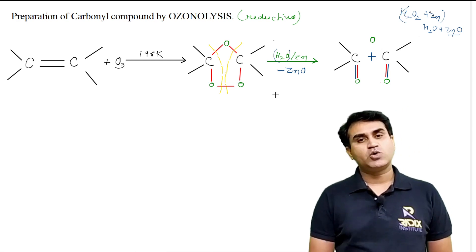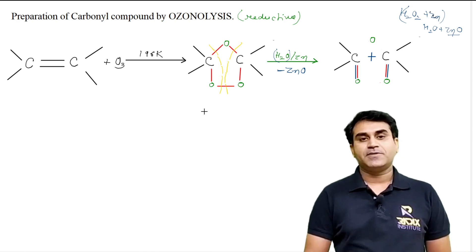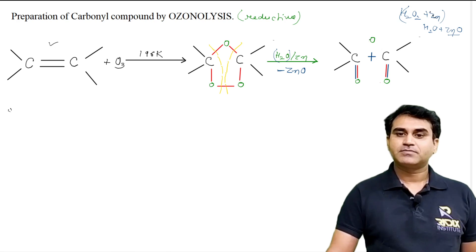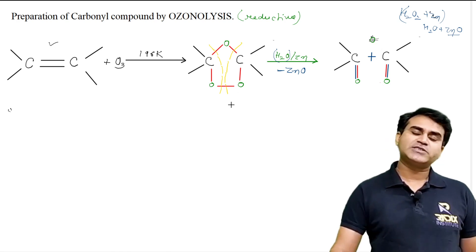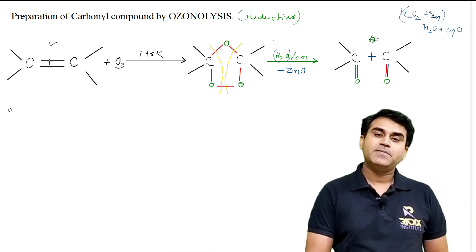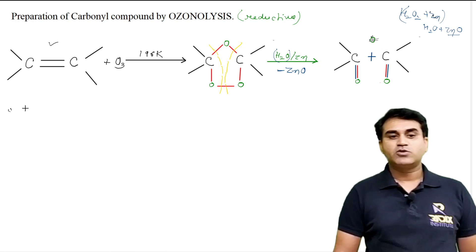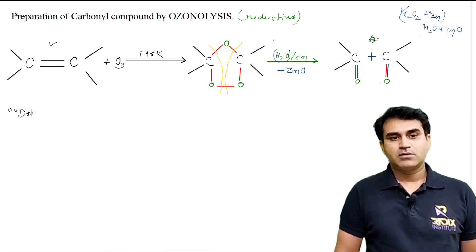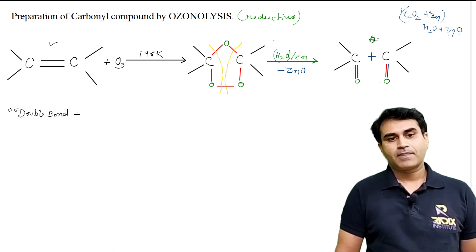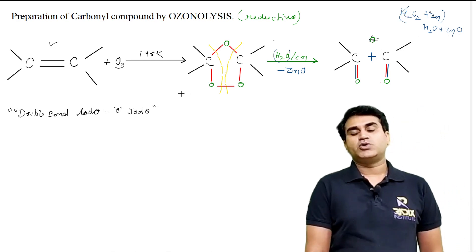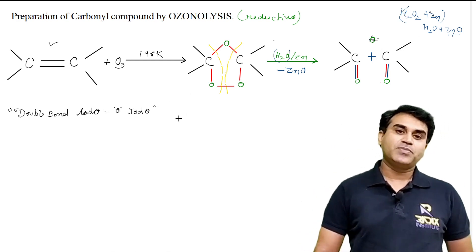यह पूरा ozonolysis reaction है. अब इस पूरे ozonolysis reaction को हम थोड़ा shortcut कर देते हैं, इसका एक trick बना देते हैं. First and last को compare करो - यहाँ double bond है, यहाँ पर आ गया double bond oxygen. Simple trick: double bond तोड़ो, O जोड़ो. जो भी reactant आपको दिया हुआ है, उसमें simply double bond break कर दो और oxygen add कर दो.